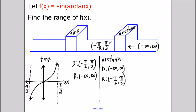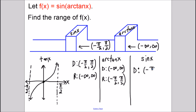To find the range of f of x, we need to consider the final part: sine of x. The domain of sine of x is usually from negative infinity to infinity, but because of the arctangent function the domain is restricted from negative pi over 2 to pi over 2. So to find the range, let's look at a sketch of sine of x, but remember we have to restrict the domain from negative pi over 2 to pi over 2.